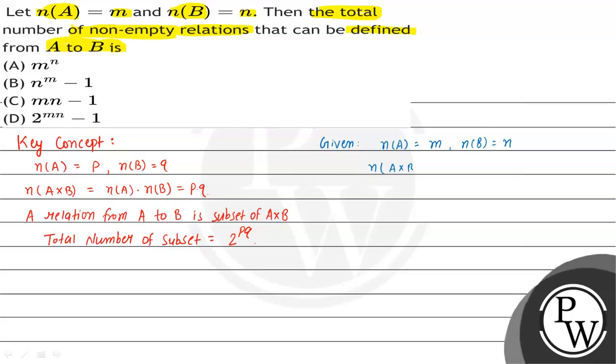The total number of subsets is 2^(mn), since a set with mn elements has 2^(mn) subsets.